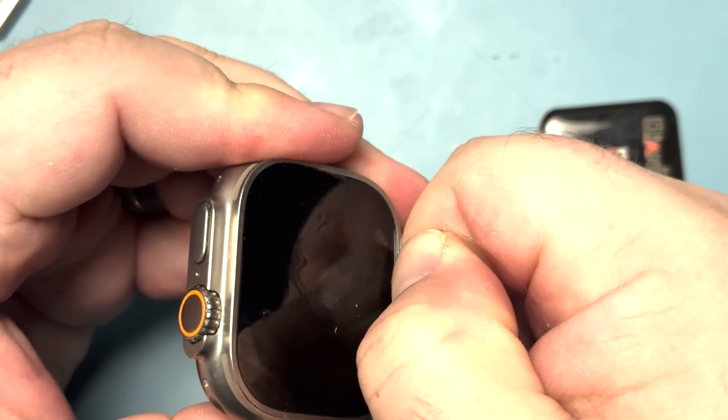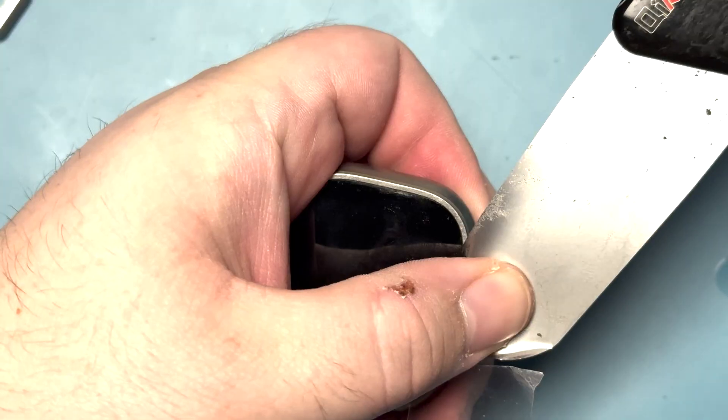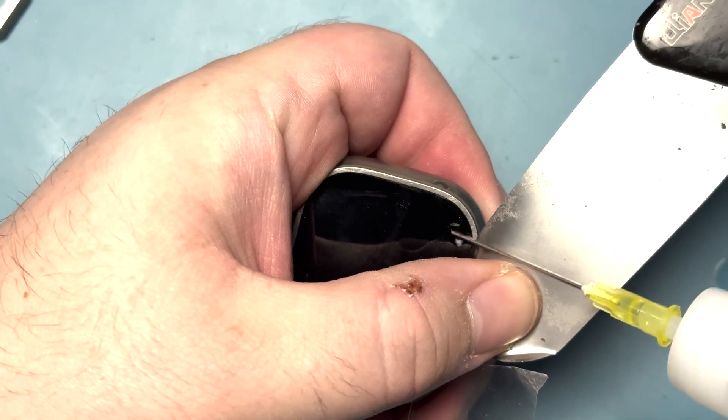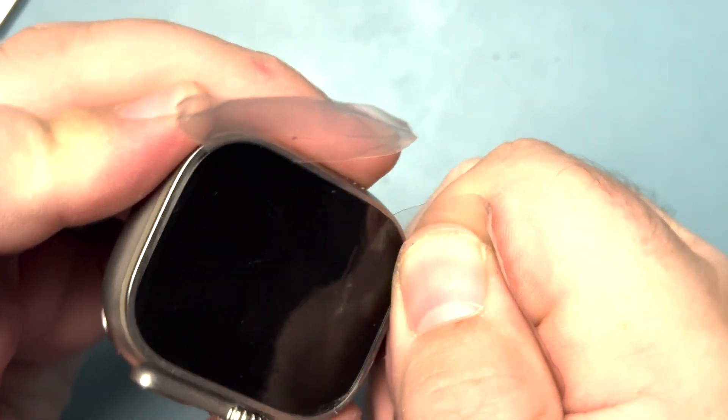Some more isopropyl alcohol to help it not stick so much. We'll slide it around and continue to add isopropyl alcohol as it dries up. Eventually the screen will start to want to pop up.